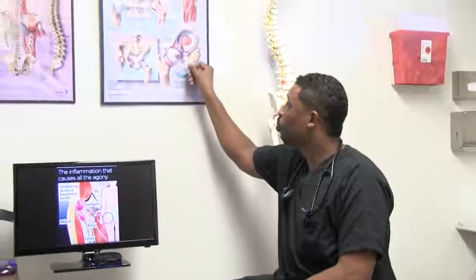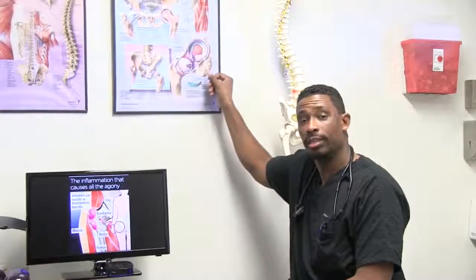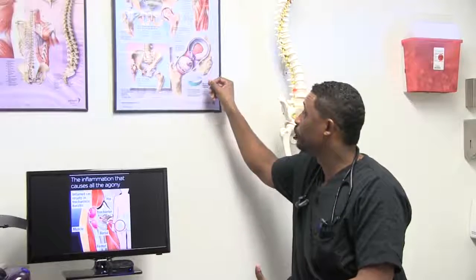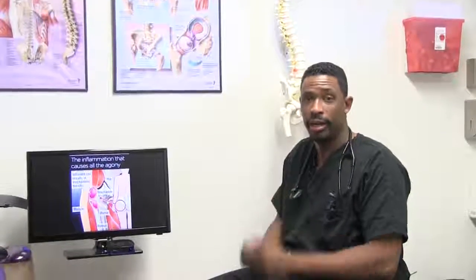When cartilage erosion starts to happen — which we can see on x-ray — you can get pain not only within the hip itself, but also in the inguinal region or groin, and occasionally it can refer back to the buttock. Those findings help us determine whether you have this problem on exam. The technical term is degenerative changes within the hip, or simply put, hip arthritis.